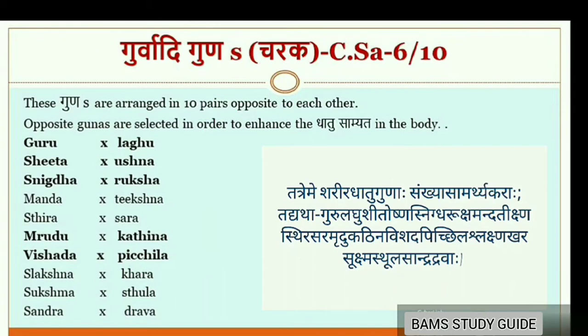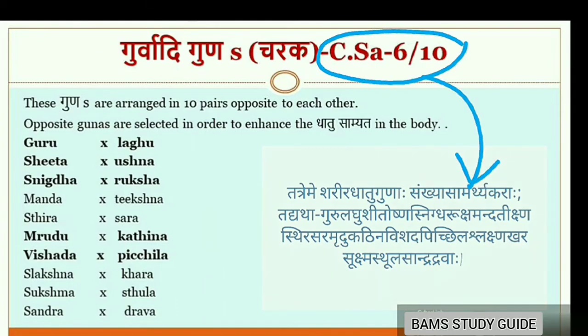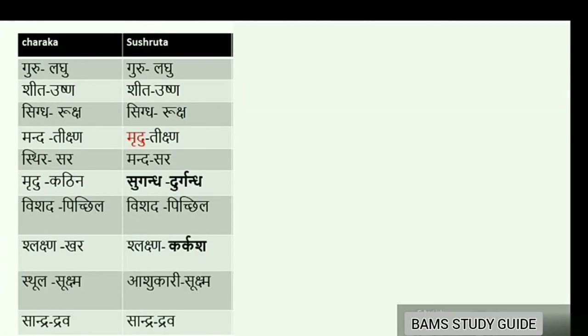Acharya Sushruta also followed the same method of mentioning Gunas — that is, one Guna opposite to another. Based on his Shloka it is 20 Gunas, but he mentioned 22 Gunas totally, making the number of Gunas controversial.